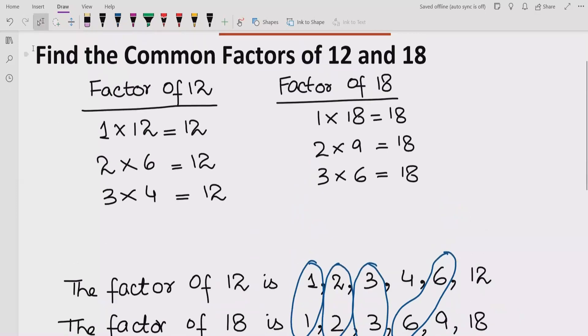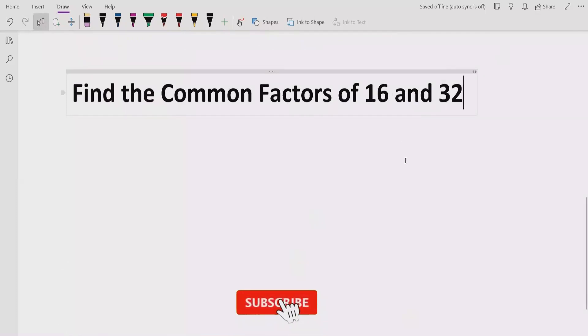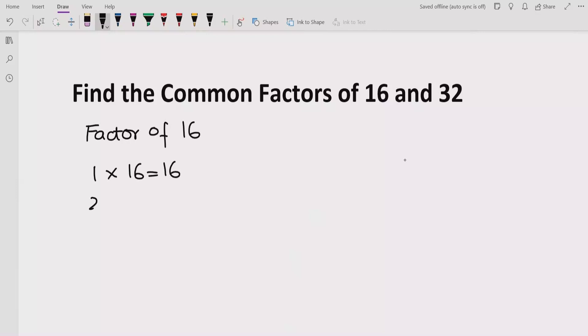Now we will see another question like this: 16 and 32. So we will see the factors of 16. 1 multiplied by 16 is 16, 2 multiplied by 8 is 16. We cannot multiply or divide 16 by 3. So 4 multiplied by 4 is 16.